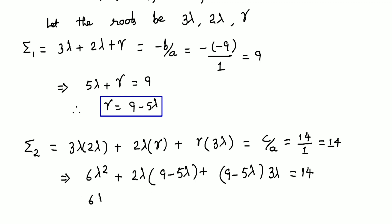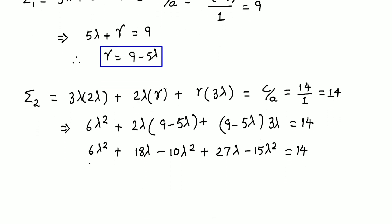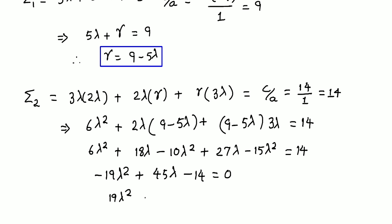Expanding: 6λ² + 18λ - 10λ² + 27λ - 15λ² = 14. Collecting like terms: (6 - 10 - 15)λ² + (18 + 27)λ = 14, which gives -19λ² + 45λ - 14 = 0. Multiplying by -1: 19λ² - 45λ + 14 = 0.